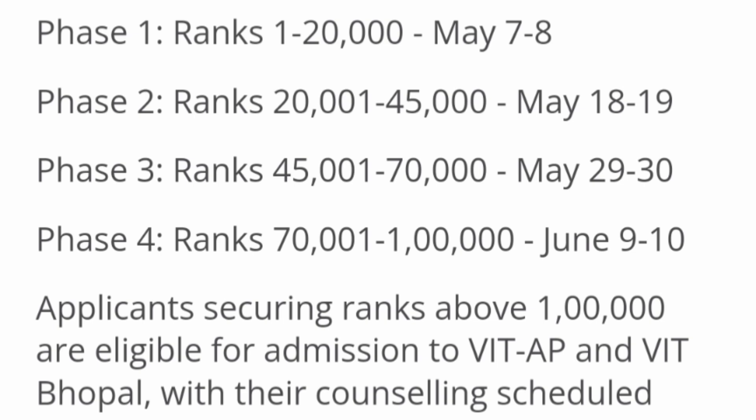Students with ranks between 45,000 and 70,000 will qualify for phase three, and their seat allocation will happen on May 29th and 30th. Students with ranks between 70,000 and 1 lakh will qualify for phase four, and their seat allocation will happen between June 9th and 10th.